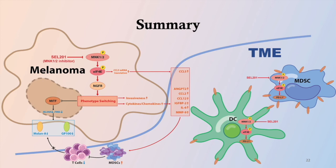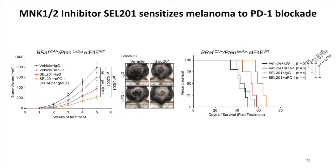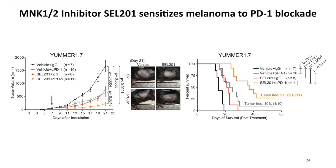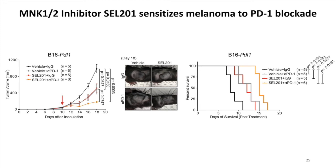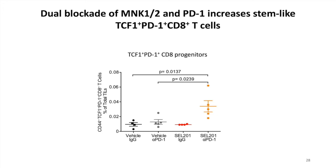Therefore, we hypothesized that systemically blocking Phospho-EIF4E with MINK inhibitors could improve the efficiency of immunotherapy. So we combined the MINK inhibitor eFT-508 with anti-PD-L1 antibody. As expected, eFT-508 sensitized melanoma to anti-PD-L1 immunotherapy, and the combination group showed significantly decreased tumor outgrowth and improved survival. This phenotype was observed across three different melanoma models, including the BRAF-PTEN-EIF4E model which is known to be immune-cold and insensitive to anti-PD-1 therapy alone, the Yumm1.7 model which is highly immunogenic, and the B16-PDL1 model which represents highly aggressive triple-wild-type melanomas. Importantly, in melanomas treated with the combination therapies, we found a significant increase of the stem-like TCF1-positive, PD-1-positive CD8 progenitor cells, which are required for maintaining a durable response to immune checkpoint blockades.